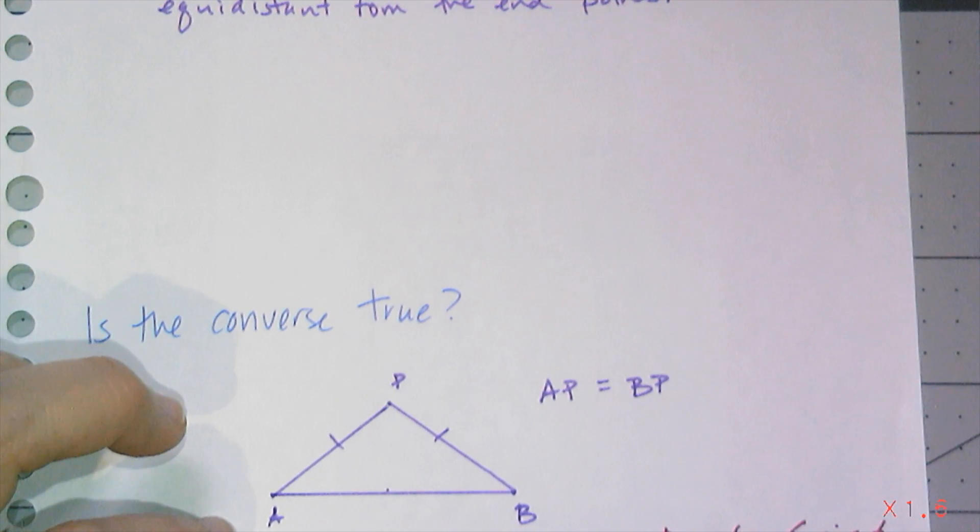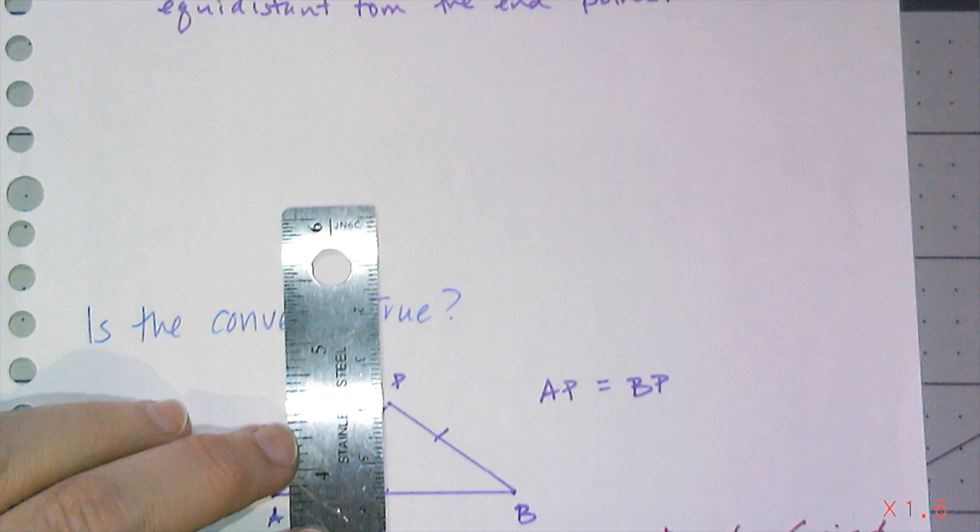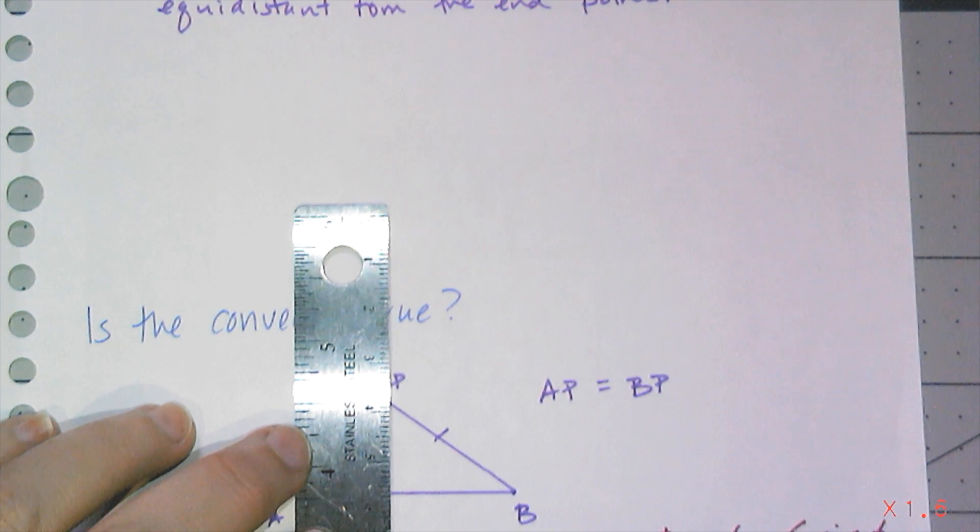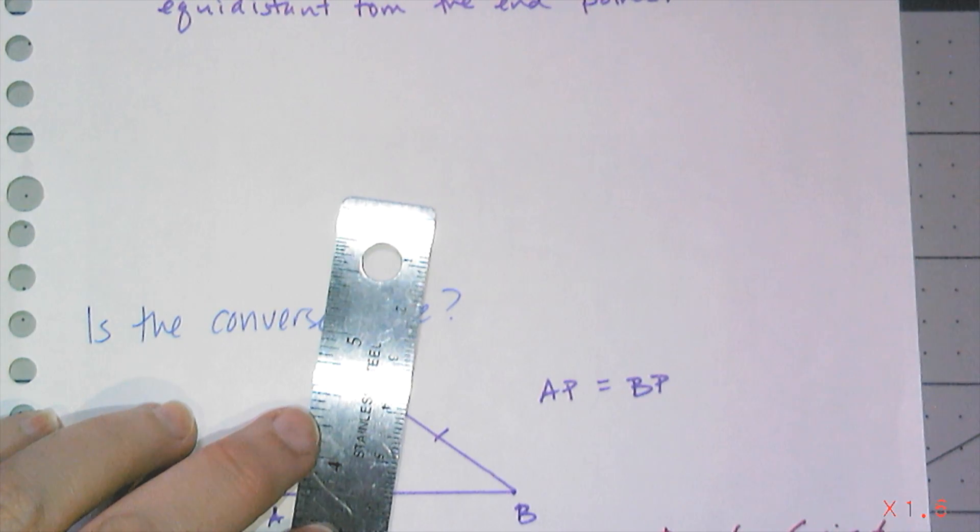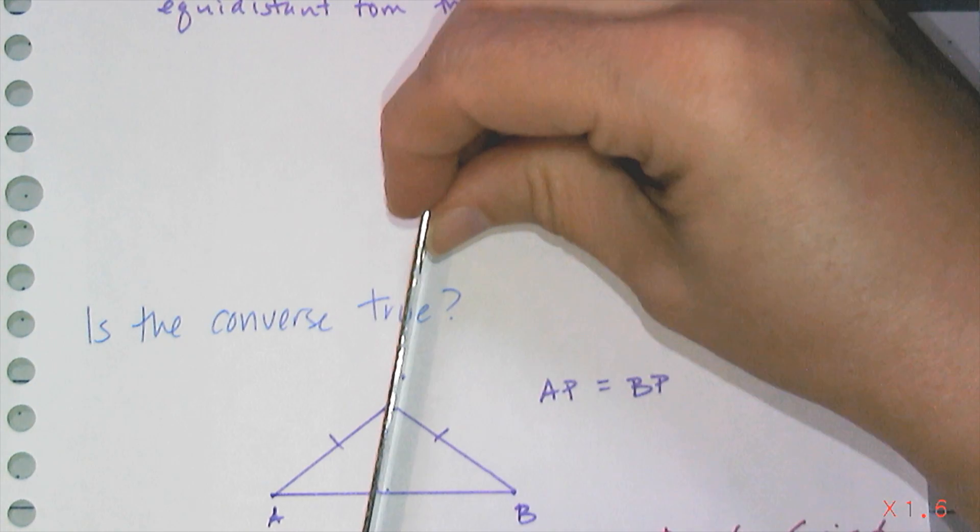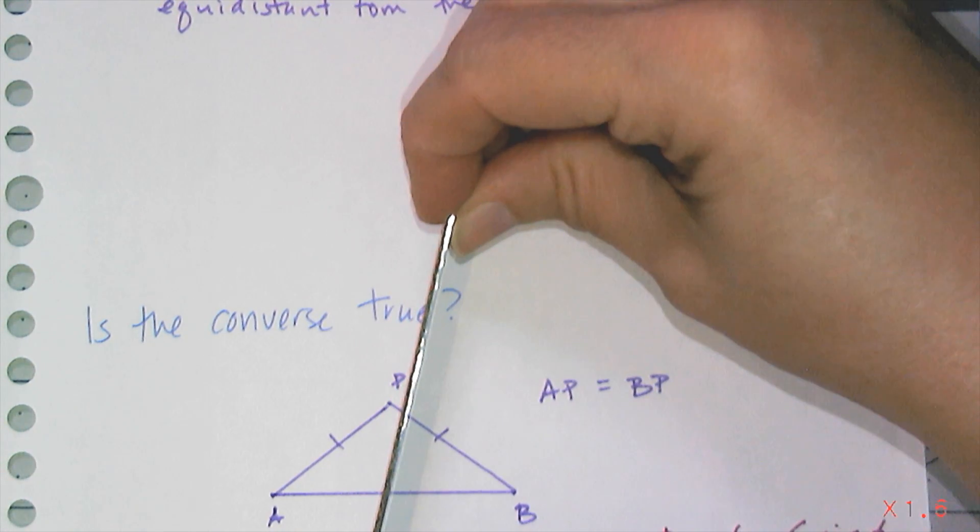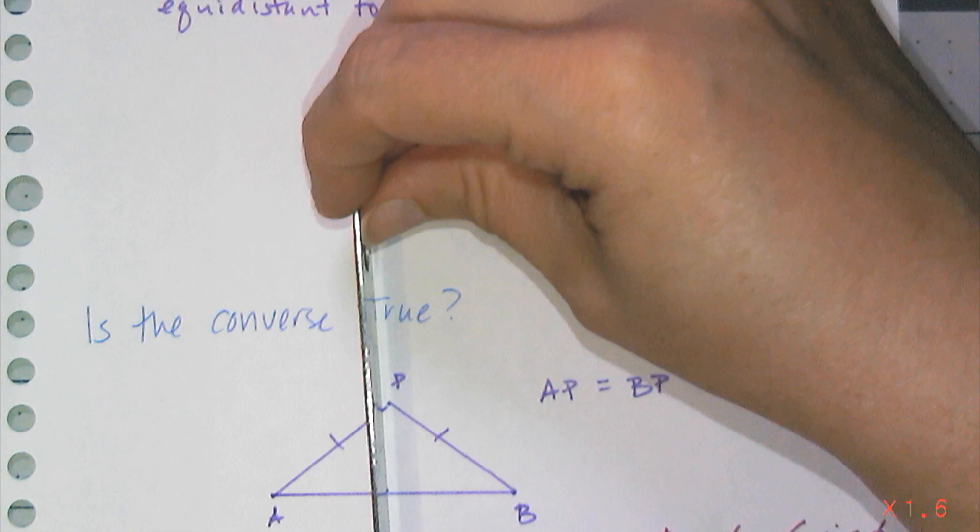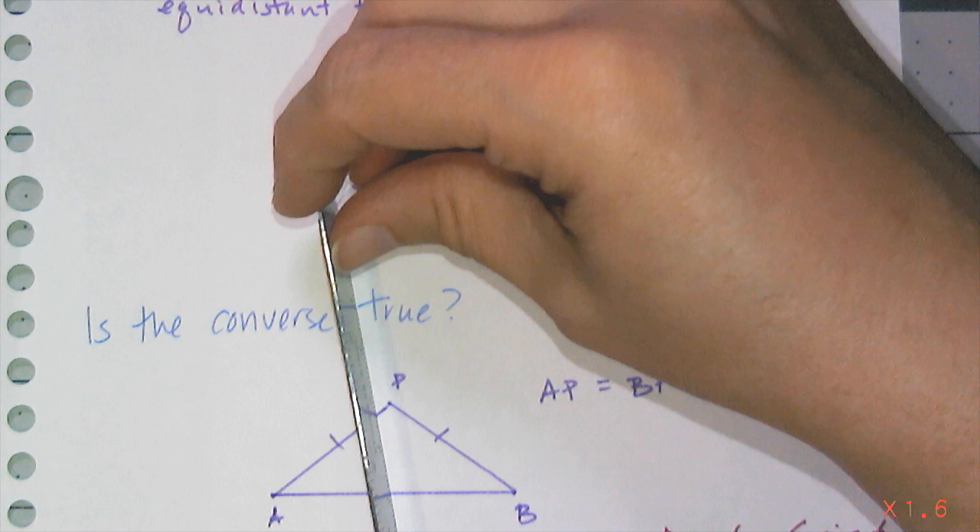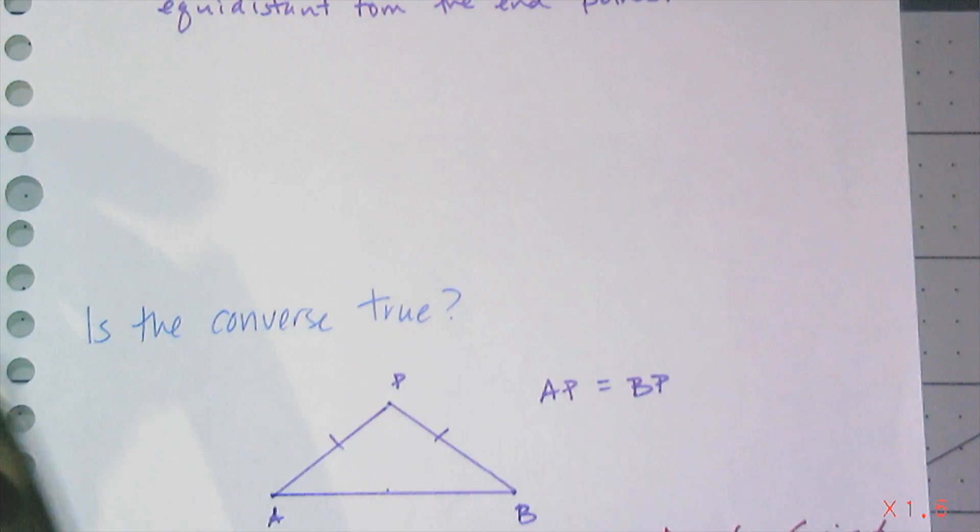Now this is something that we're going to prove later on in the year. But for now, we're just going to do a little thought experiment. So if this point is not on the perpendicular bisector, it would be at some sort of angle, like so. And if it's at an angle, there's no way to get those side lengths to be the same. So if it's not at a right angle, then one of the line segments is going to be longer than the other. So actually, the converse is also true.